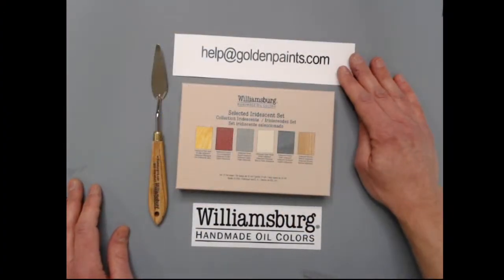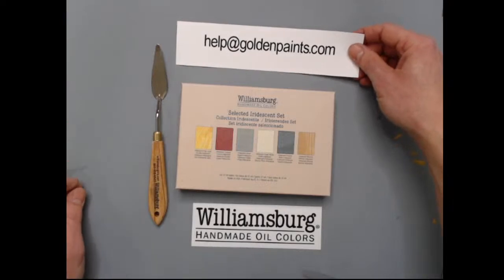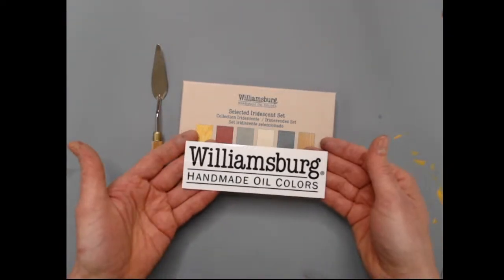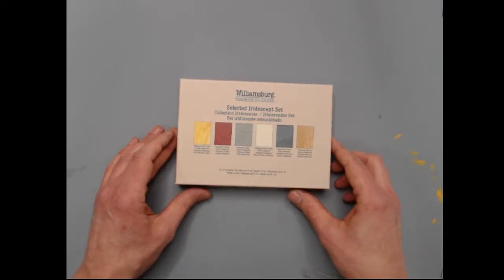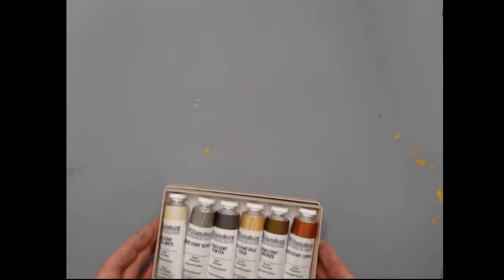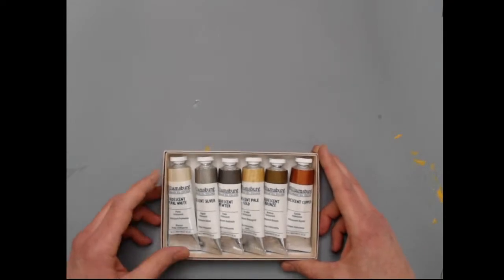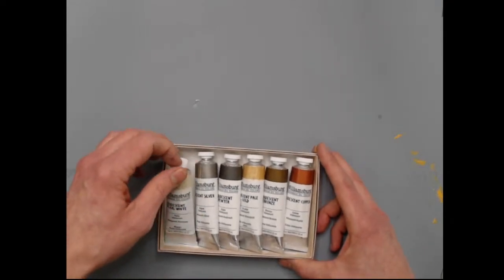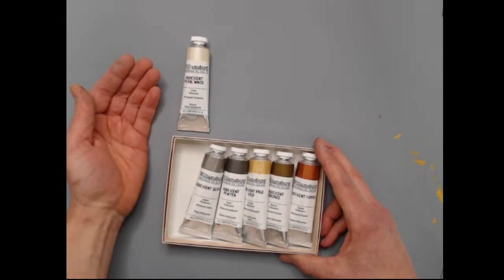I'm going to go to the overhead camera so we can see the iridescent box. Here's our email help@goldenpaints.com if you ever have any materials needs. This is the select iridescent set, six different colors in 37ml tubes.